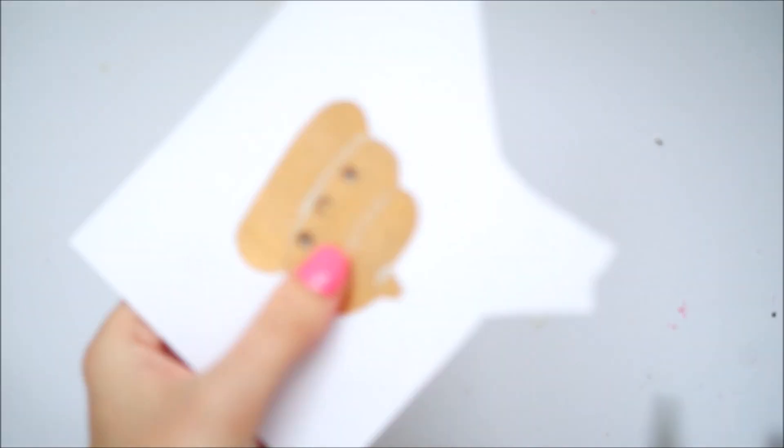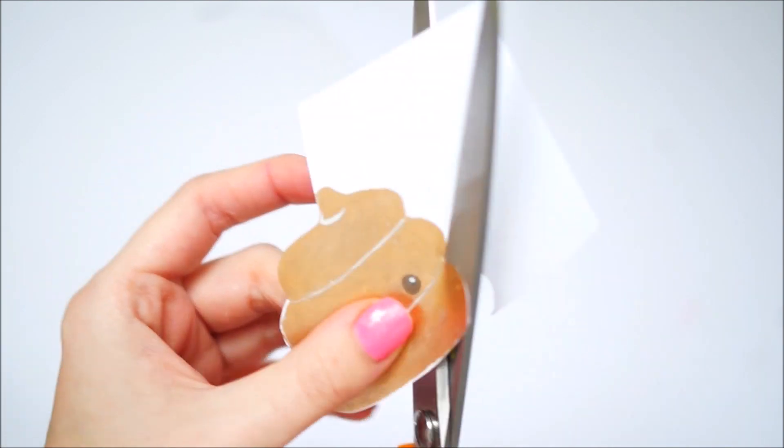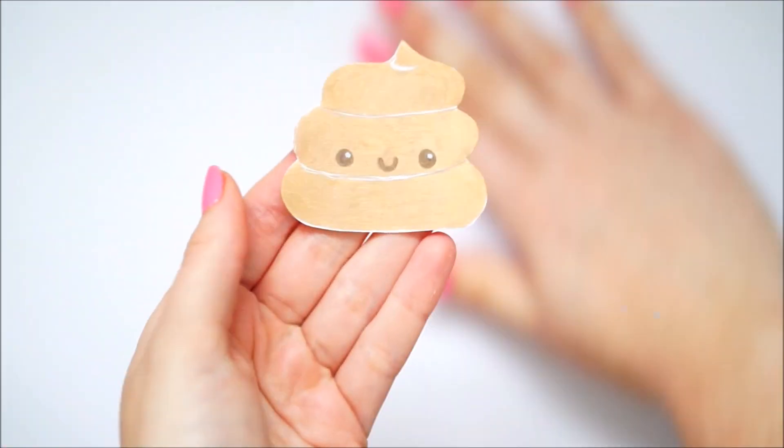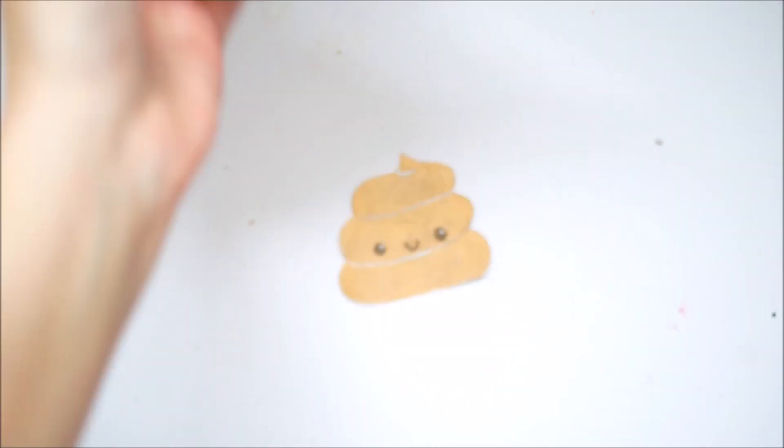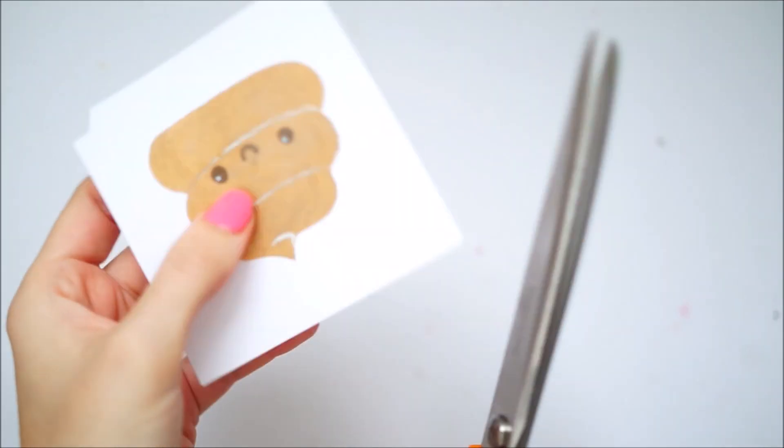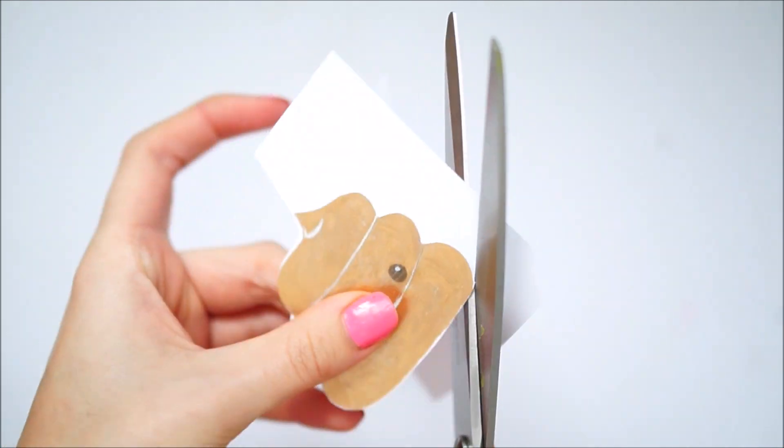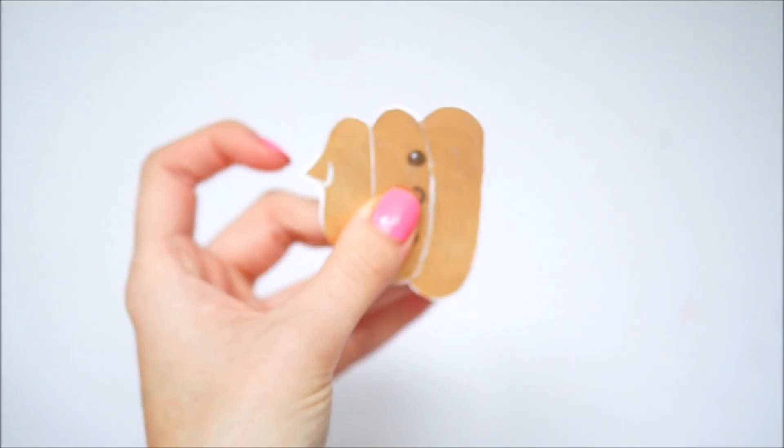I then covered the poop completely in tape and cut around the shape. Once I was happy with that, I taped it down to another white piece of paper and cut this out also. I then taped around the two edges of the pieces of paper until I made it to the top of the poop and left this bit open.